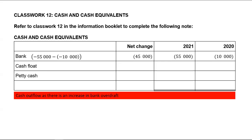For cash flow, last year we had 20,000 and this year we have 25,000. You take 25,000 minus last year's amount of 20,000. You will realize that your cash flow for the current year is bigger than cash flow for last year, and the increase is regarded as a cash inflow — we are going to show it without brackets. For petty cash, it was 7,000 last year and this year it is 6,000, which resulted in a cash outflow — we used more petty cash.